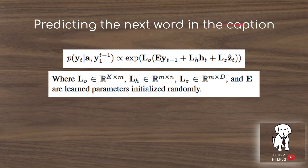Predicting the next word in the caption is basically a combination of these terms: the embedded matrix of the Y term, the output, and then the context vector times these parameters.